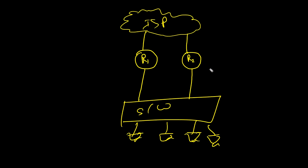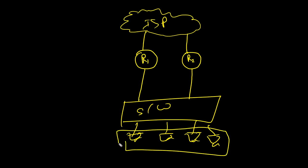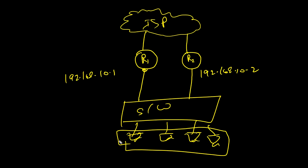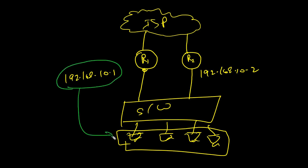But you can configure only one default gateway on a machine. For example, if the IP address of this interface is 192.168.10.1, either I can assign 10.1 as the default gateway to all users, or I can configure the other IP address — but only one at a time.